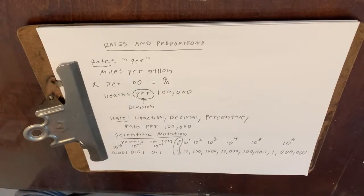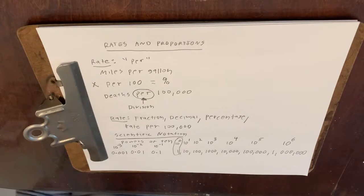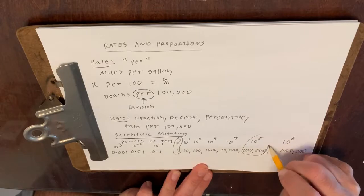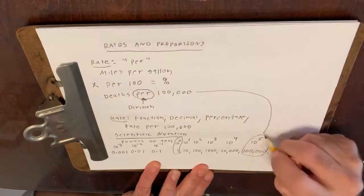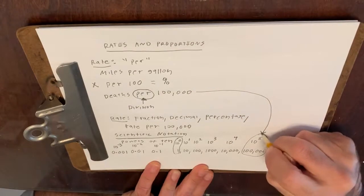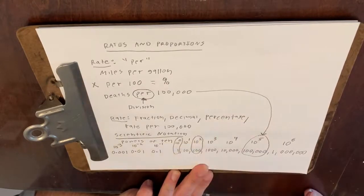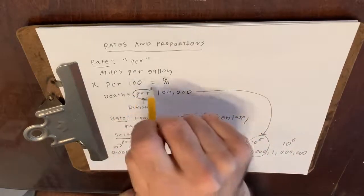Usually rates can be pretty small — though they could be really large too. In statistics, you'll typically get rates that could be pretty small and might require you to go in and out of scientific notation. The important one to remember is that 100,000 is 10 to the fifth, since death rates are very often expressed as deaths per 100,000. And 10 to the second is 100, because percentages are per 100.